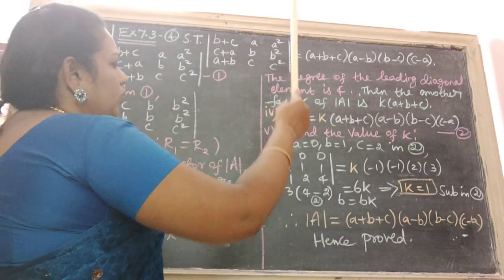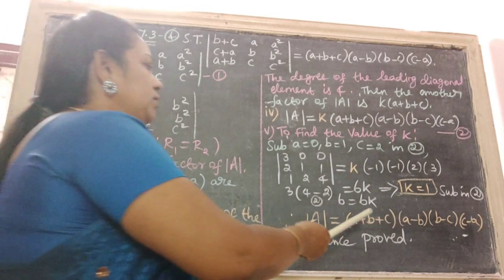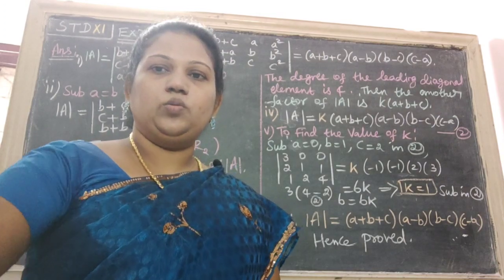Then substitute in the second equation. Therefore, we get determinant A equal to A plus B plus C into A minus B into B minus C into C minus A. Hence proved.